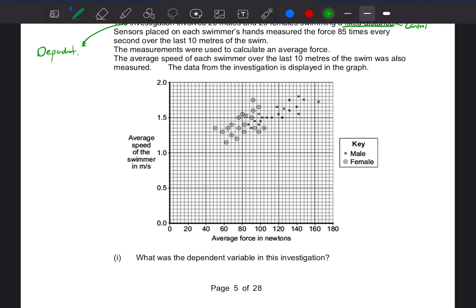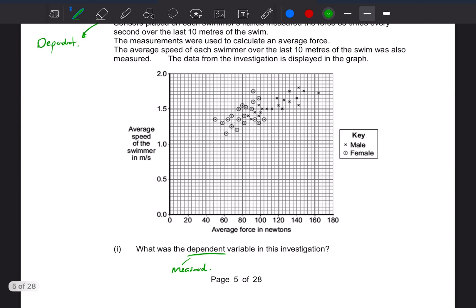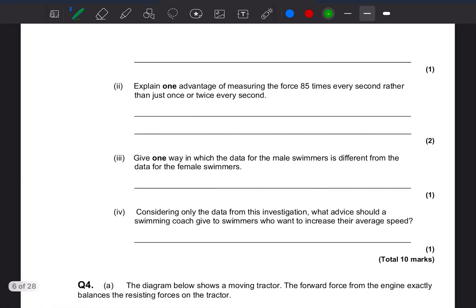What was the dependent? So dependent, so dependent is the one that is measured and changes based on the independent. So in this graph we can see that they changed the average force. That's what we said is the independent. And the dependent variable was the average speed of the swimmer. So it's the average speed of the swimmer.